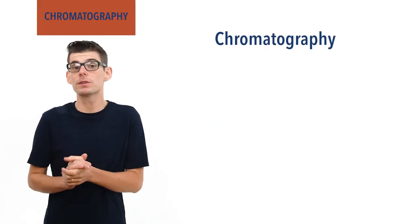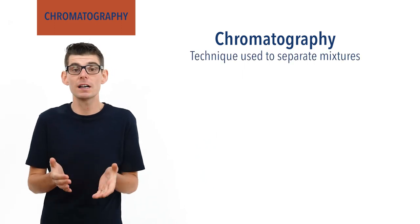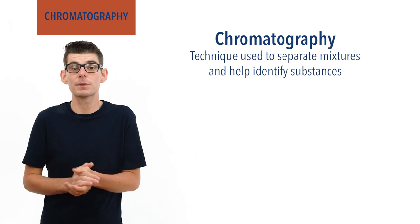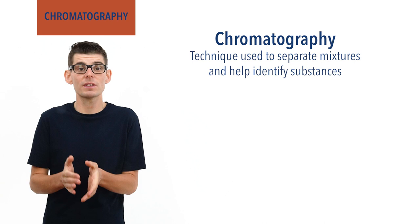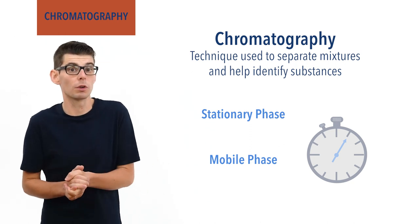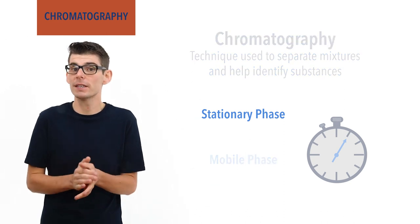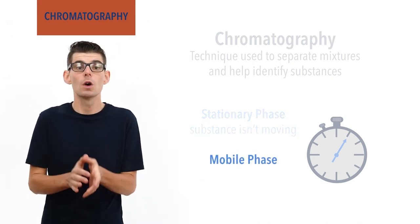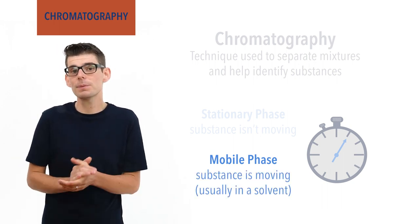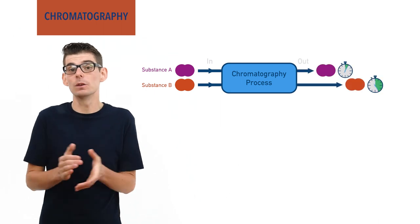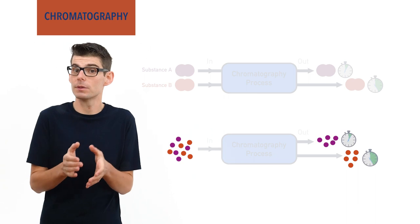Chromatography is a technique that can be used to separate uniform mixtures and can also be used to help identify substances. There are several different types, and the use of each depends on the type of mixture and substances being studied. All, however, work on the same idea of a stationary and mobile phase, and the length of time each substance spends in either phase. The stationary phase refers to time spent by a substance when it isn't moving, and the mobile phase refers to time spent whilst it is moving, usually in a solvent. Different substances spend different amounts of time in each phase, meaning if they all start at the same time, they will finish at different times, allowing the mixture to be separated.